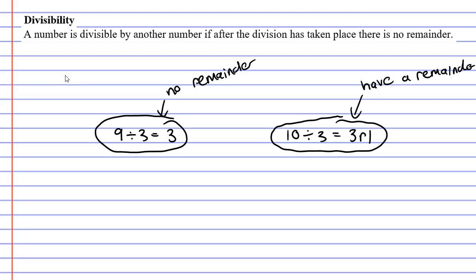When there is no remainder, it is divisible. We say 9 is divisible by 3. Whereas if there is a remainder, we say it's not divisible. So 10 is not divisible by 3.